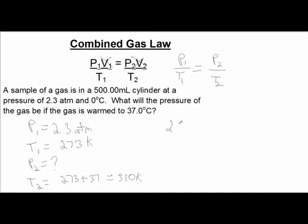2.3 over 273 equals P₂, our unknown, divided by T₂, which is 310.